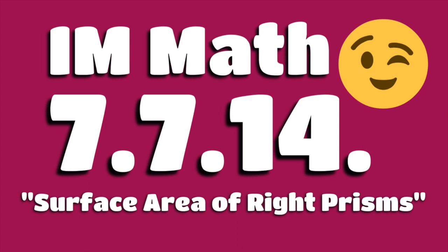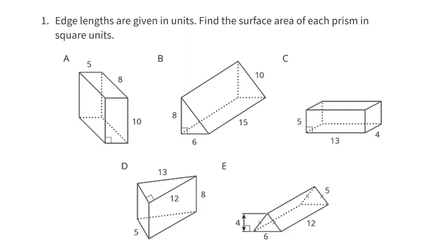7th grade Illustrative Mathematics, Unit 7, Lesson 14: Surface Area of Right Prisms. Problem number 1. Edge lengths are given in units. Find the surface area of each prism in square units.